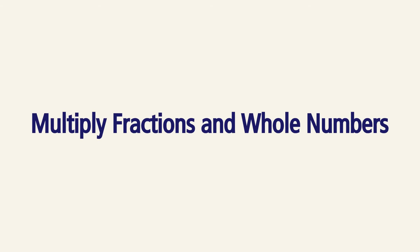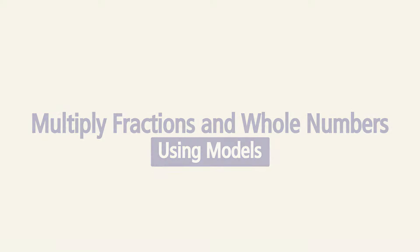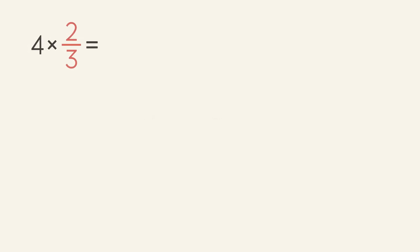Multiply fractions and whole numbers using models. Let's take a look at an example: four times two-thirds. When we multiply four times two-thirds, it means we are finding four groups of two-thirds. Let's draw it out.